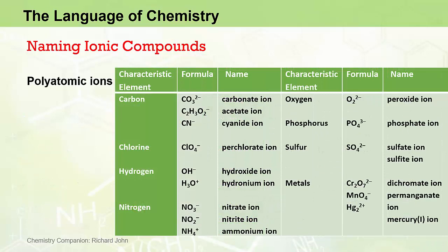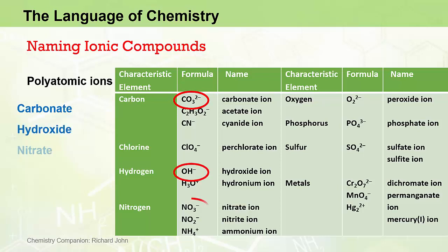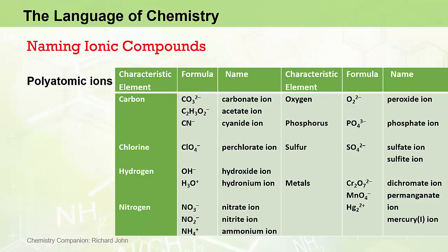Of course, there are not just monatomic ions. Whether cations or anions, there are a lot of polyatomic ions — ions that contain more than one atom. At this stage, we simply have to remember the names of some of the more important ones, including the carbonate ion, the hydroxide ion, the nitrate ion, the phosphate ion, and the sulfate ion, which are all negatively charged polyatomic anions. The most important polyatomic cations include the ammonium ion (NH4+) and the hydronium ion (H3O+).